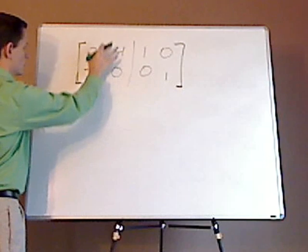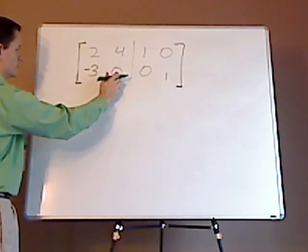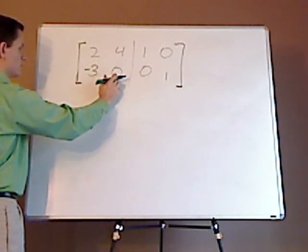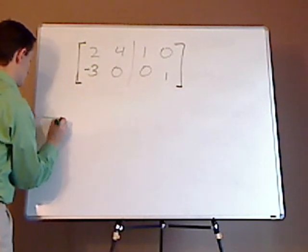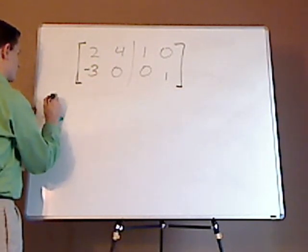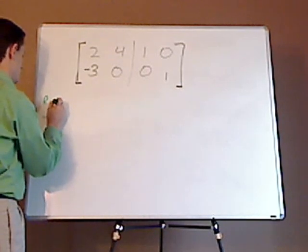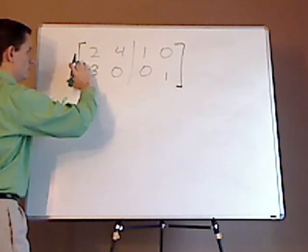First let's shift the rows. Since this has a zero here, let's just shift them first. So I'm going to switch row one and row two. Whatever you do, you're doing it to the whole entire row.